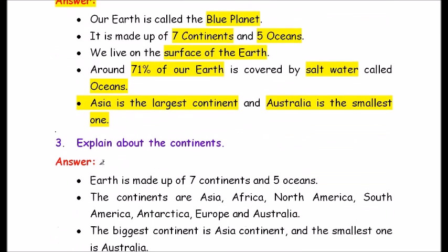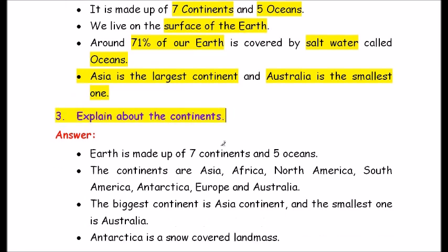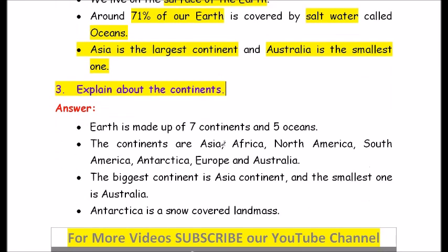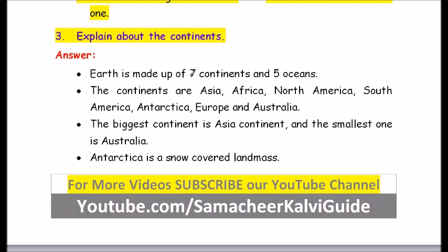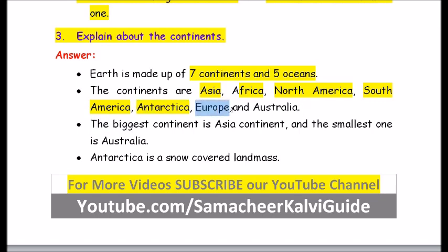Question number 3: Explain about the continents. Answer: Earth is made up of seven continents and five oceans. The continents are Asia, Africa, North America, South America, Antarctica, Europe and Australia. The biggest continent is Asia and the smallest one is Australia. Antarctica is a snow-covered landmass.